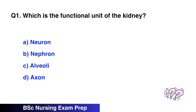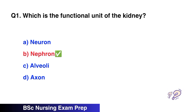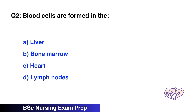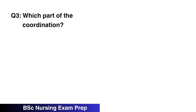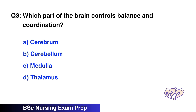Question number 1: What is the personal unit of the kidney? The right option is B, nephron. Question number 2: Where are blood cells formed? The right option is B, bone marrow.